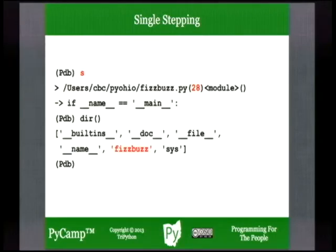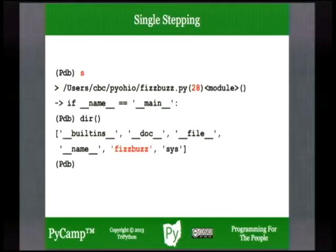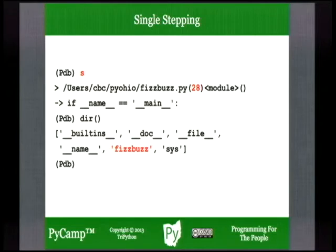Let's step through that function definition. A function definition is a single compound statement in Python — it doesn't execute all the statements in the function; it makes a new function object and binds it to the function name 'fizzbuzz'. So stepping takes you ahead in your file to line 28 (or 29 in Python 2), and now the function object is defined. You're at the 'if __name__ == "__main__"' block. You can use dir() to see that 'fizzbuzz' has been added to your namespace, bound to the function object.